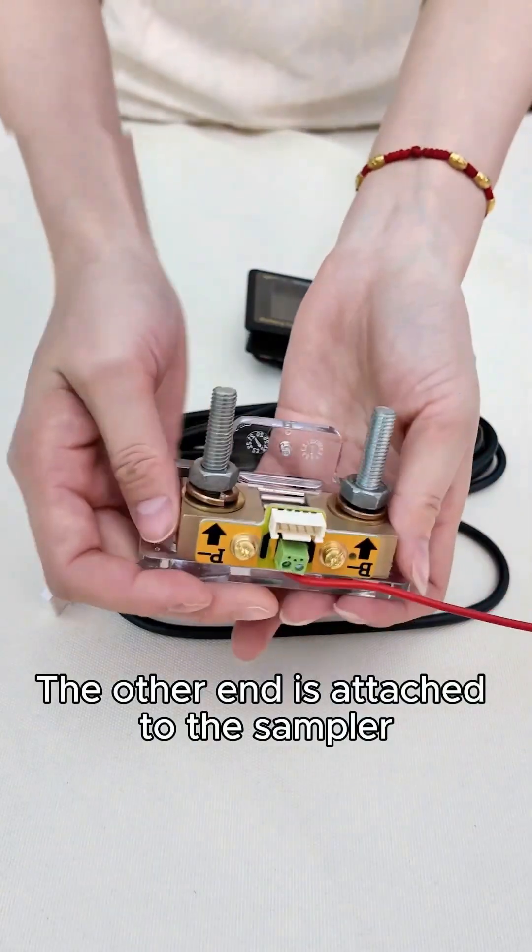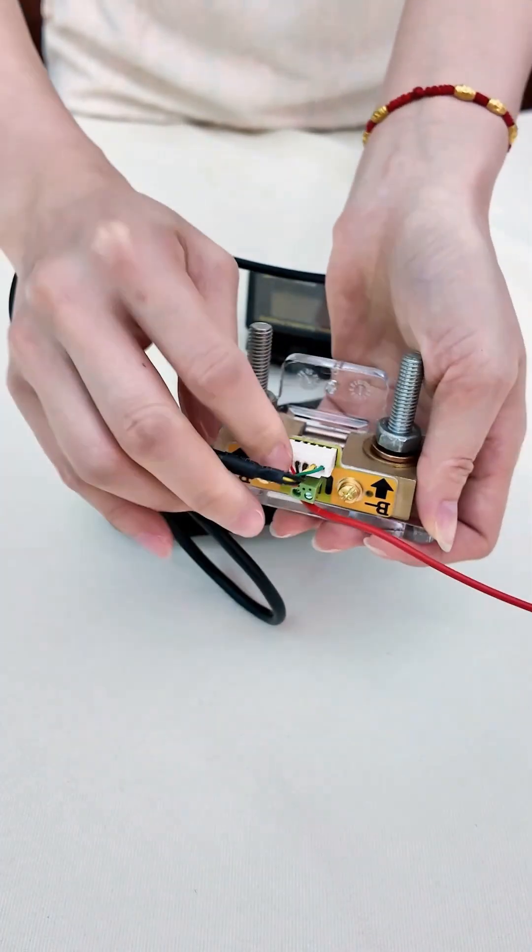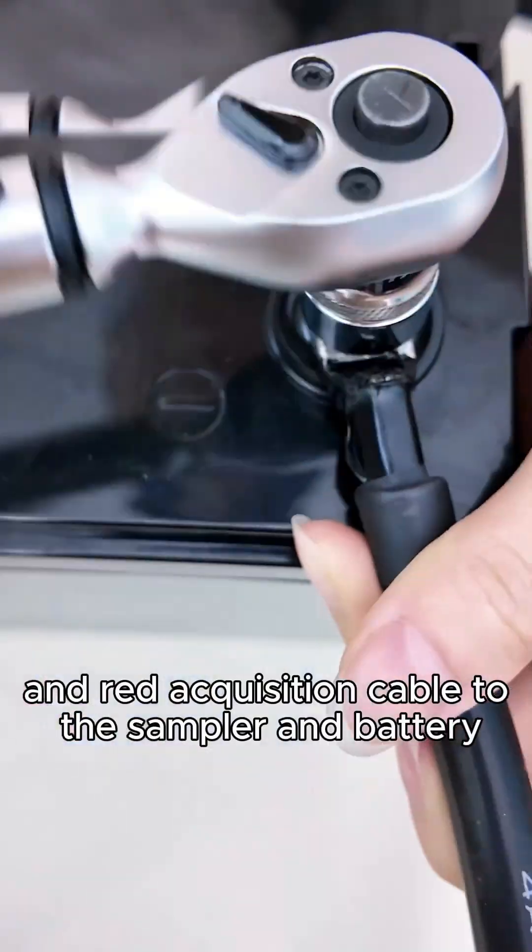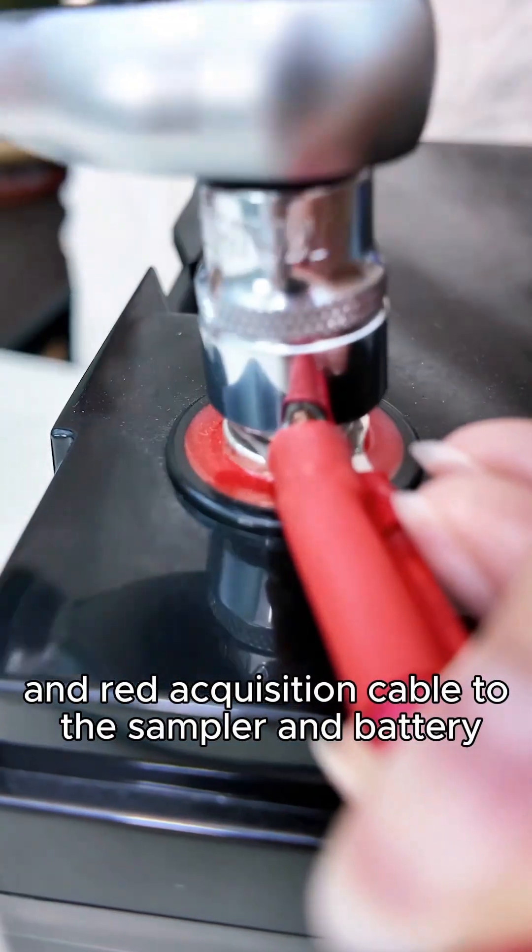The other end is attached to the sampler. Connect the cable and red acquisition cable to the sampler and battery, respectively.